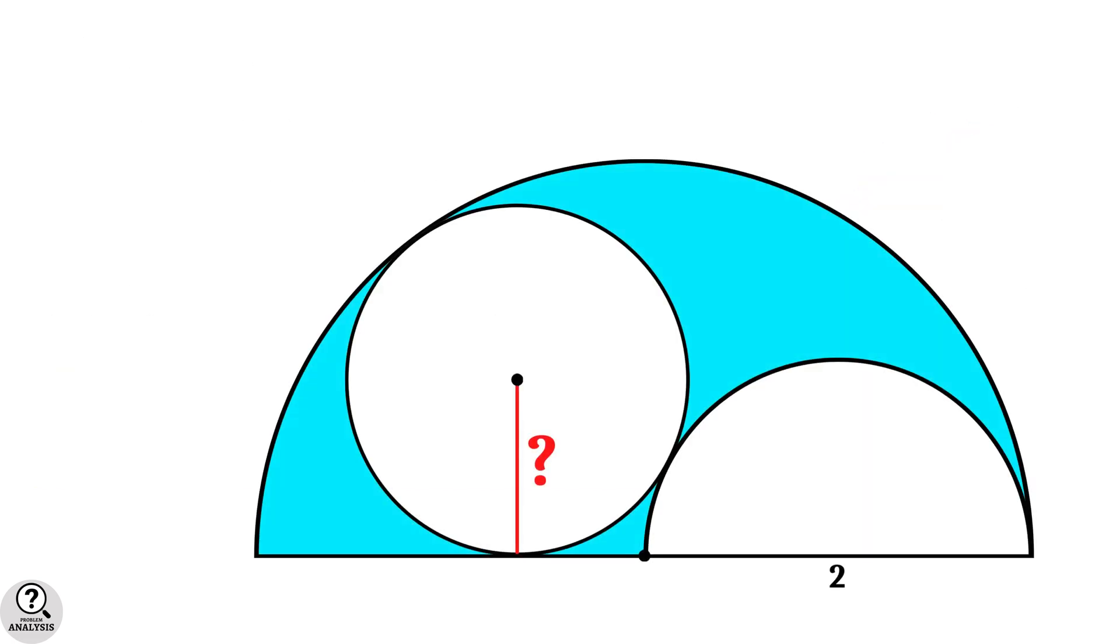Now come back to our problem. And suppose radius of the circle is R units. Now consider the circle and the larger semicircle. They are touching each other. Then by the mentioned result about tangent circles, their centers and the touching point are collinear.